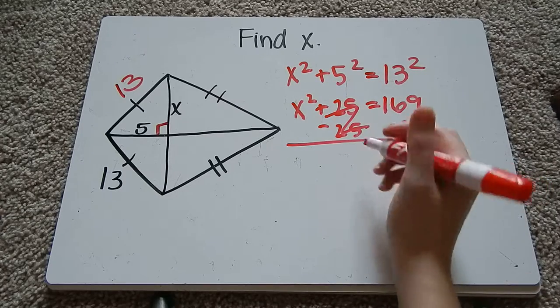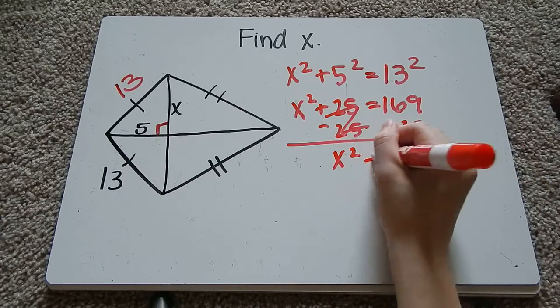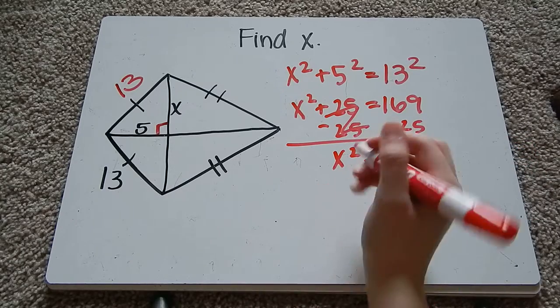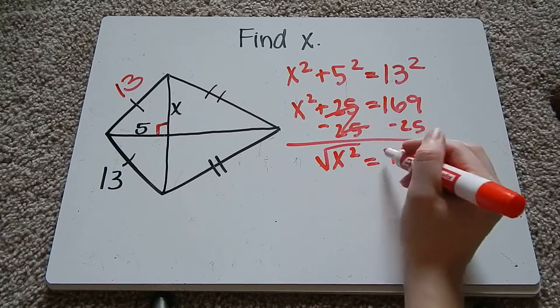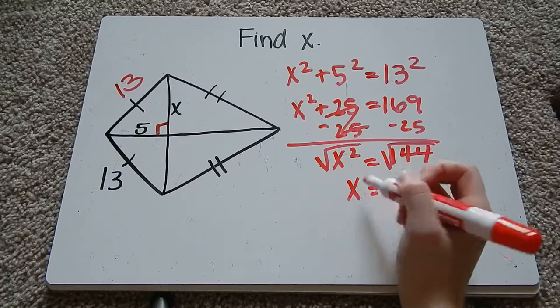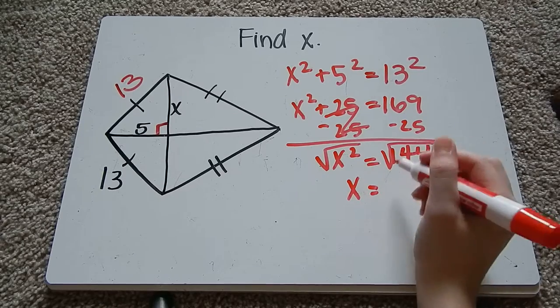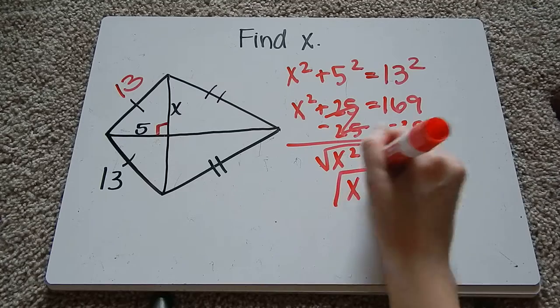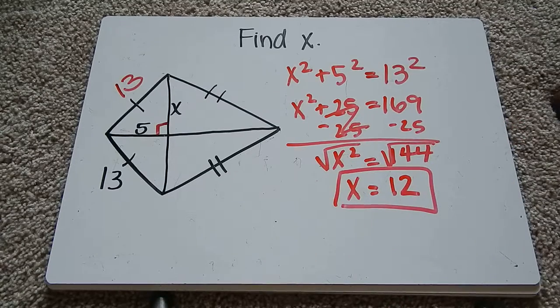This is going to zero out so I get x squared equals 144, and to undo the squared I want to take the square root. The square root of x squared is x, the square root of 144 is 12.